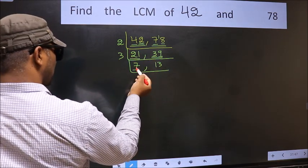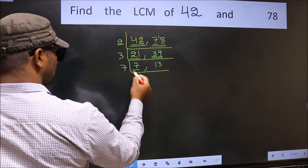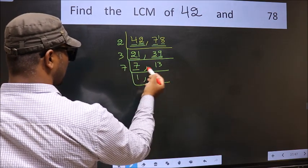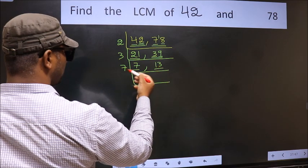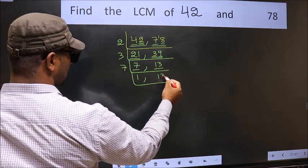Now here we have 7. 7 is the prime number so 7, 1s, 7. The other number 13 not divisible by 7. So we write it as it is.